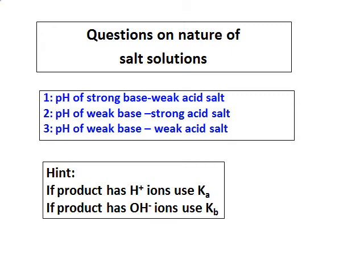One more thing to consider: you will always have confusion on whether to use Ka or Kb. The hint is — if you write the reaction and the product has hydrogen ions, use Ka. If the product has hydroxide ions, use Kb. You will see the application of this in the questions we will be doing now.